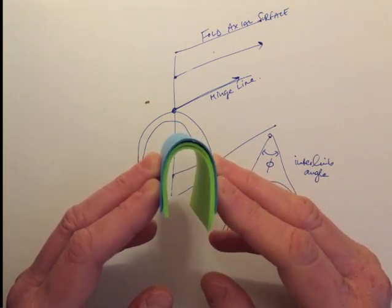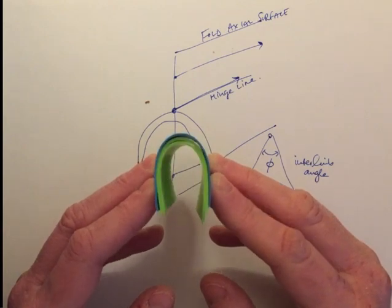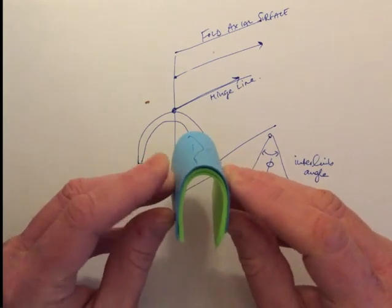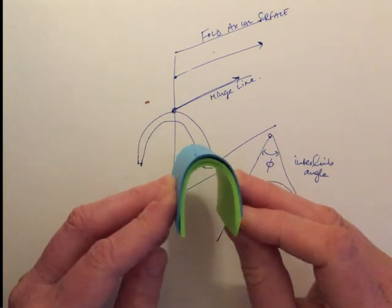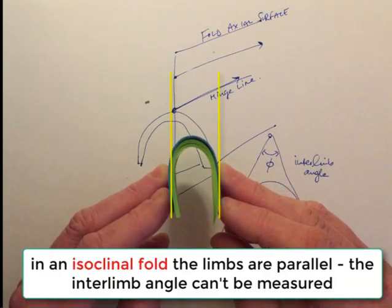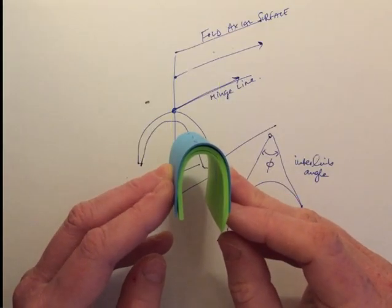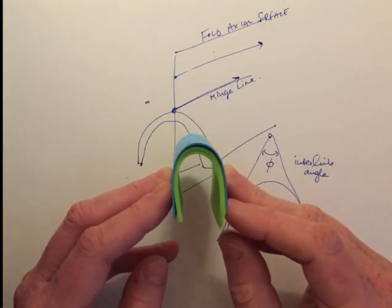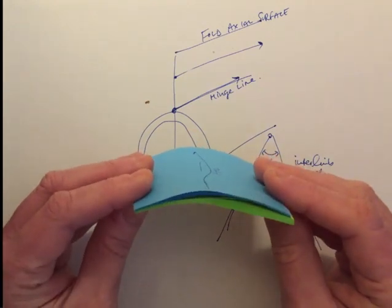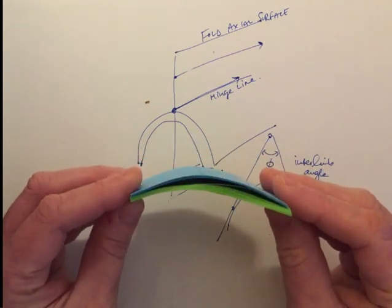The interlimb angle can progressively tighten until a point where our limbs are parallel to one another. We can't define an interlimb angle for that situation where we have parallel limbs because the two lines just head straight off parallel. But that's a special case of very, very tight fold known as an isoclinal fold. So these are some of the words that we use to describe the interlimb angle—the tightness of the fold.